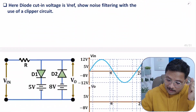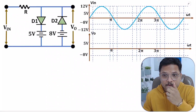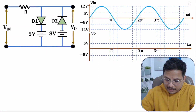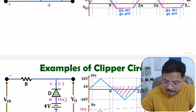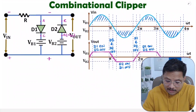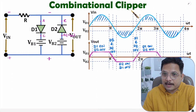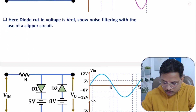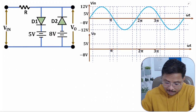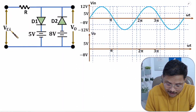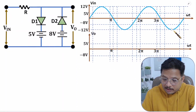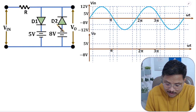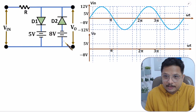Now I am going to explain the third question. The third question is quite similar in explanation to the combinational clipper circuit I described earlier. But here we are solving it with respect to the given values. V_in is a sinusoidal waveform, and D1 and D2 are diodes connected along with batteries.